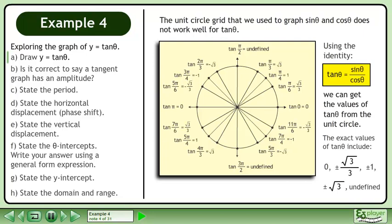The exact values of tan theta include 0, positive or negative root 3 over 3, positive or negative 1, positive or negative root 3, and undefined.